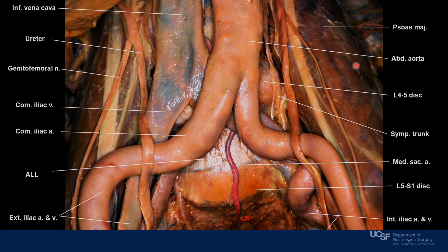Laterally, we observe the psoas major on the left and right sides. We see the ureter, as well as the genitofemoral nerve lying lateral to the ureter. Usually, this bifurcation happens at the level of L4-L5 or even L5-S1. This is important when planning to approach any portion of the lumbar region from an anterior perspective, since it may require some mobilization of the abdominal aorta or the iliac vessels.